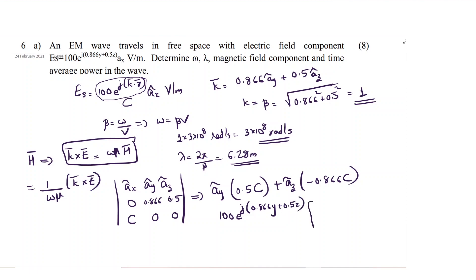You can write it as 100, c is 100 e raised to j into 0.866 y plus 0.5 z, this much is the c part, into 0.5 ay minus 0.866 az.